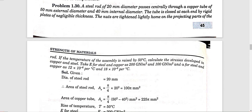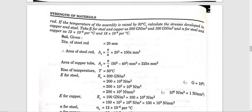Problem 3: A steel rod of 20 mm diameter passes centrally through a copper tube of 50 mm external diameter and 20 mm internal diameter — this is a hollow copper tube with the steel rod inside. The tube is closed at one end by a rigid plate of negligible thickness. The nuts are tightened lightly on the projecting parts of the rod. If the temperature of the assembly is raised by 50 degrees Celsius, calculate the stresses developed in the copper and steel. Take E and alpha values for steel and copper.